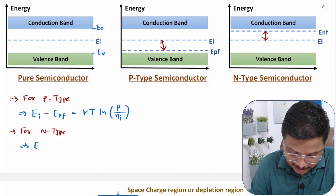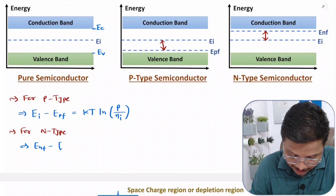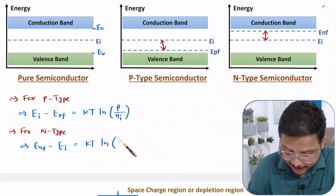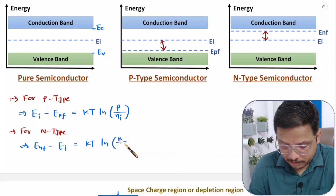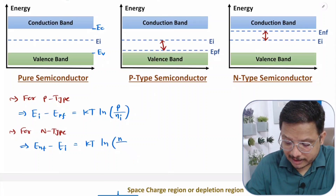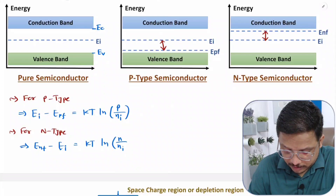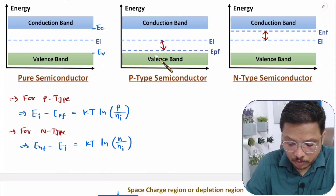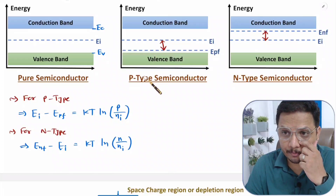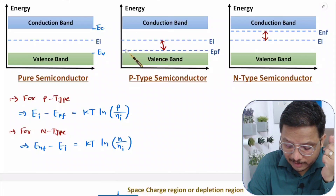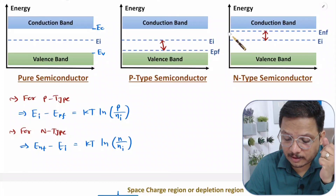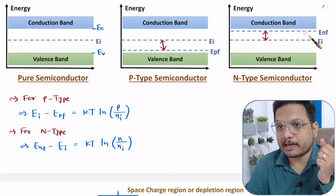So ENF minus EI equals KT ln of N, the electron concentration in N-type, divided by intrinsic concentration Ni. That is how we can identify shifting in energy due to doping. With P-type, Fermi energy level is getting shifted towards valence band; with N-type, Fermi energy level is getting shifted towards conduction band.